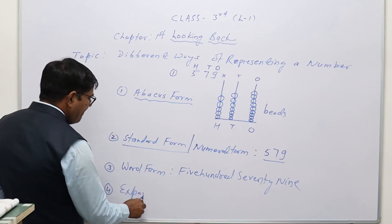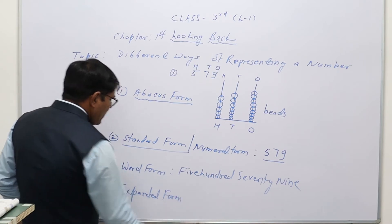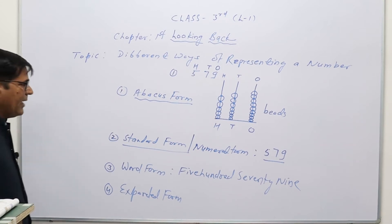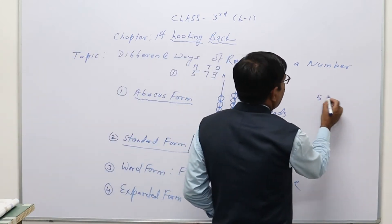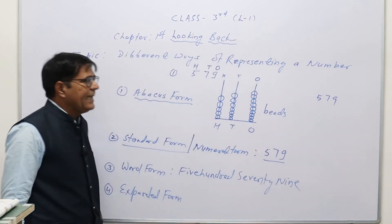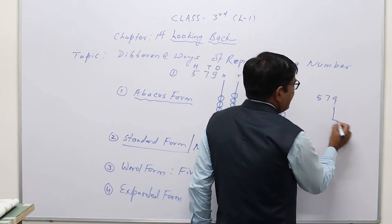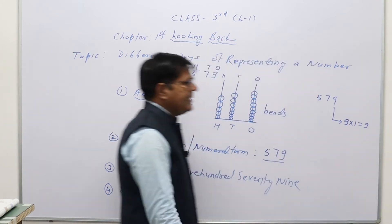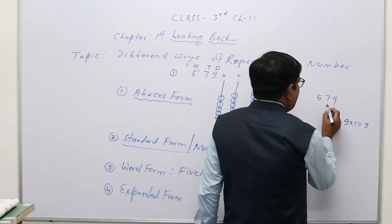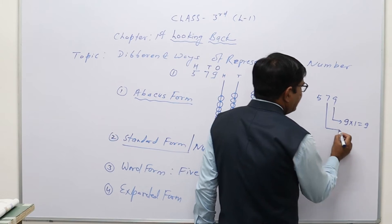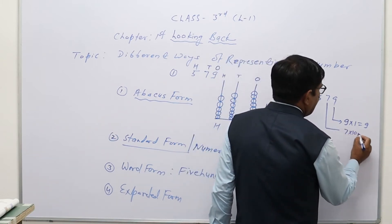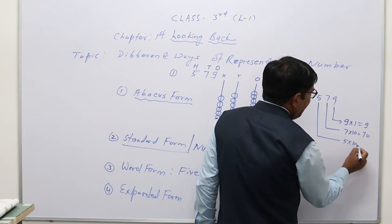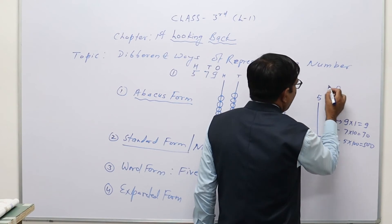The fourth and last form is expanded form. In expanded form, we write the place value of every digit. For the number 579: the place value of the digit at ones is 9, so 9 × 1 = 9. The place value of the digit at tens is 7, so 7 × 10 = 70. The place value of the digit at hundreds is 5, so 5 × 100 = 500.